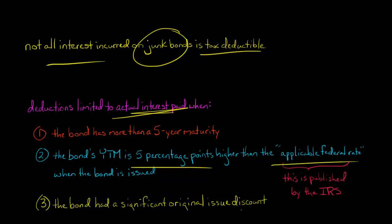This is basically where we talk about the high yield aspect. How do we know what the applicable federal rate is? This is actually published by the IRS. Let's say that this was 6% and the bond's yield to maturity was 13%.